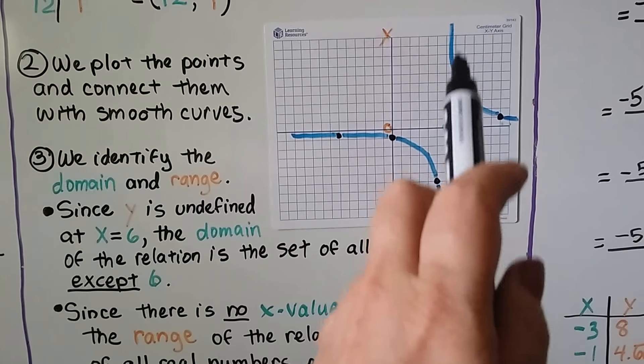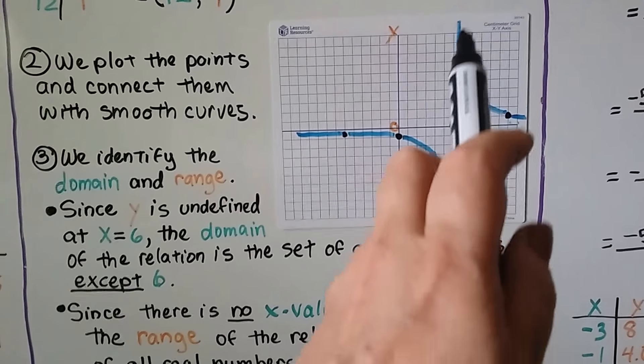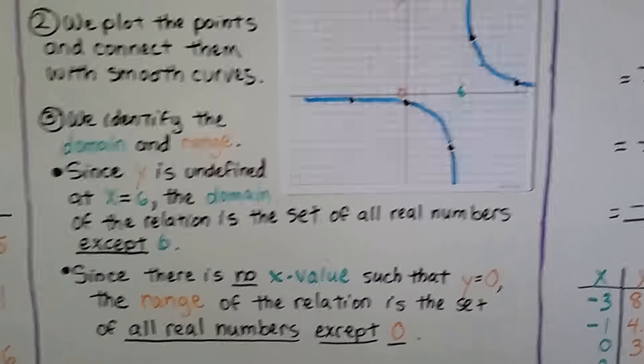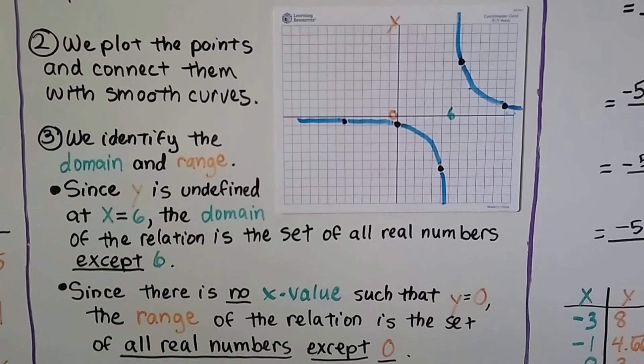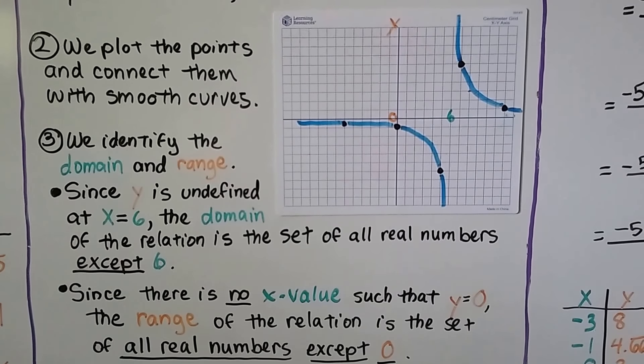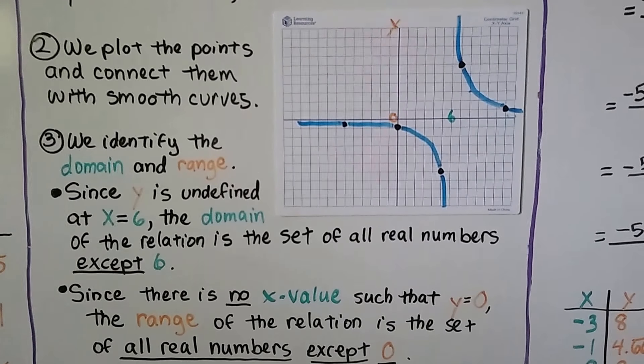Even for the positives for y, it doesn't touch 6, but it approaches it. And there's no x values such that y equals 0. And the range of the relation is the set of all real numbers except 0.